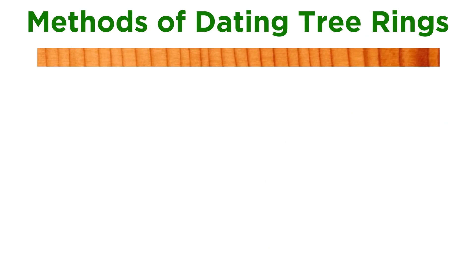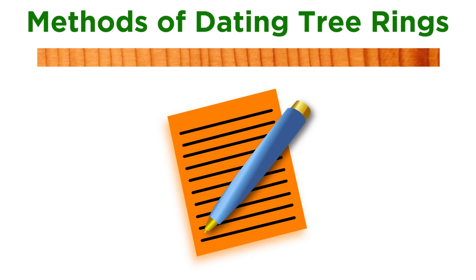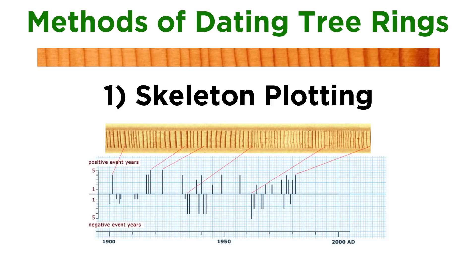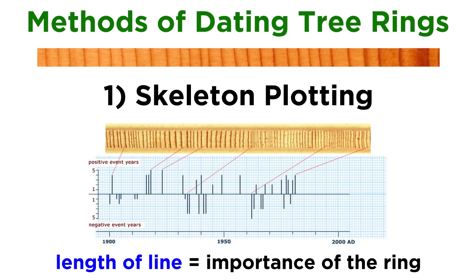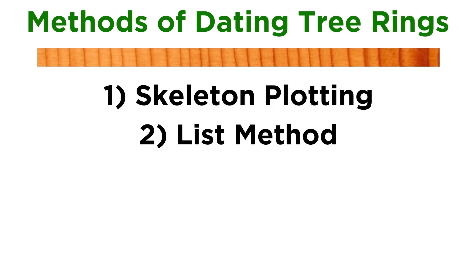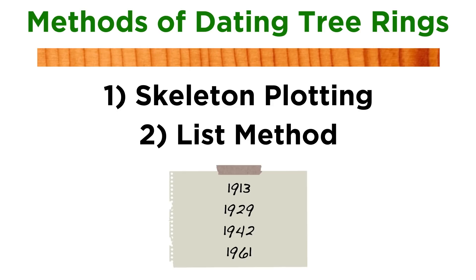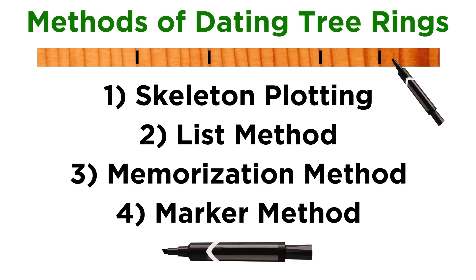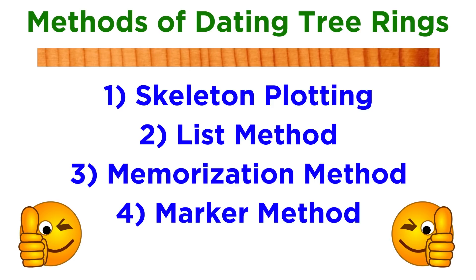There are many methods used to date tree rings. The process can be done entirely using pen and paper, or with the assistance of computer programs. One of the earliest paper methods, rarely used today, is skeleton plotting, where a straight line is drawn on graph paper and each vertical line represents a year of growth — the length representing the importance of that ring to the chronology. Other methods include the list method, which involves writing down narrow ring years and matching them to other trees; the memorization method, which involves identifying and memorizing narrow years to search for in each sample; and the marker method, which involves physically marking key years on actual cores. These methods can also be used in conjunction with one another according to the preferences of the researcher.